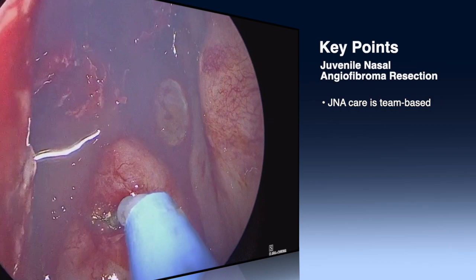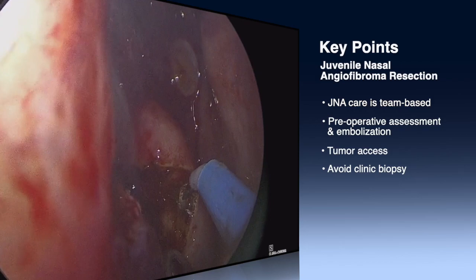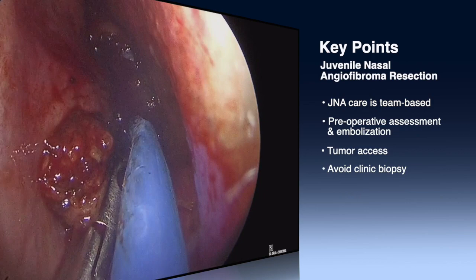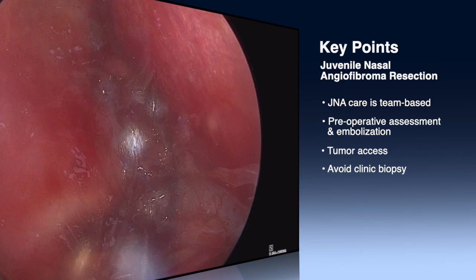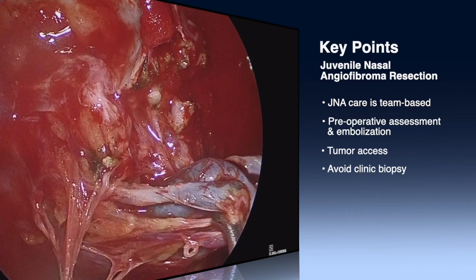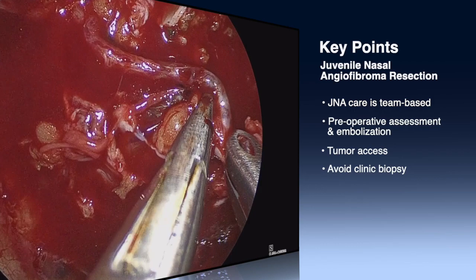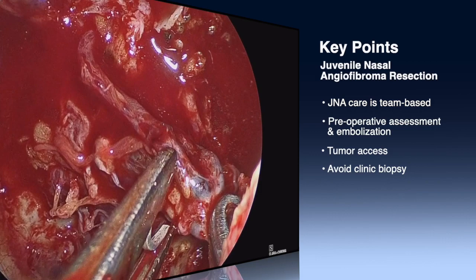The first key point is that taking care of JNA patients is a team-based endeavor. I always do these with my neurosurgical colleagues, and neurointerventional radiologists are extremely important for preoperative angiography and embolization. Tumor access is also key — as you assess the vascularity of these tumors after embolization, you must prepare for whatever approach is needed. In some cases these are done entirely endonasally; as we showed in this video, an occasional transmaxillary approach is needed; and although quite rare, open approaches or craniotomies may also be necessary. Lastly, a key point: if you have a young male in clinic with a vascular-appearing tumor, there is a high chance it could be a JNA, and this is a tumor you do not want to biopsy in clinic as you will have an uncontrolled hemorrhage on your hands.